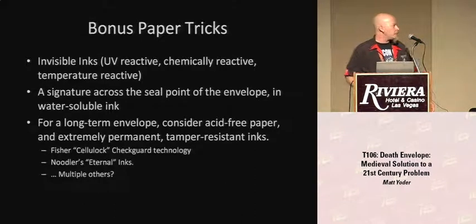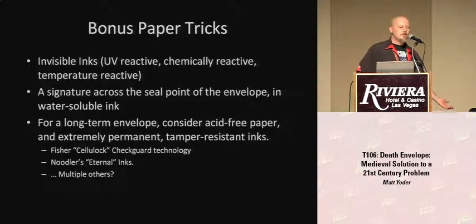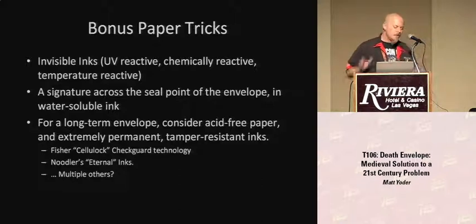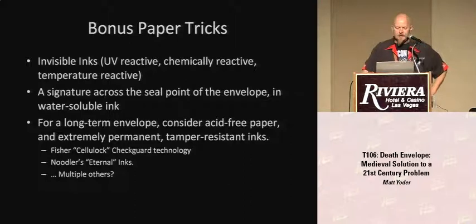Here we get into some of the stuff I really enjoy with the paper world. There are a lot of interesting things you can do with paper in terms of invisible inks that only show up under UV. A signature across the seal of an envelope gives you a little bit more indication if it's been tampered with, especially if you're using water-soluble ink — if someone steamed it open, it's going to get blurred. For a long-term envelope, acid-free papers apply just as they would to any other archiving. You want acid-free paper and durable inks — there's interesting cellulock technology that's fairly impossible to remove from paper once used, and Noodler's Eternal Ink as well.